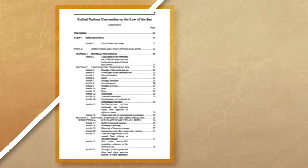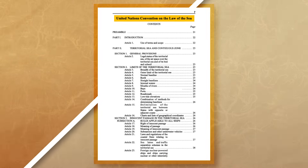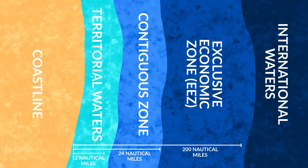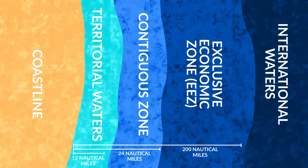Since we're on the topic of boundaries and natural resources, we also need to talk about UNCLOS, which stands for the United Nations Convention on the Law of the Sea. In 1982, the United Nations held a conference to help countries better understand how to deal with allocational boundary disputes in the sea, and the International Law of the Sea was adopted.